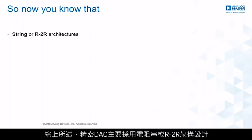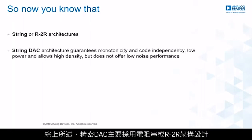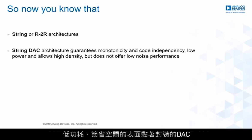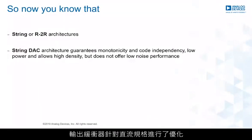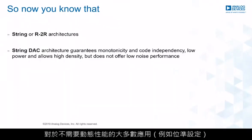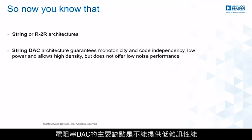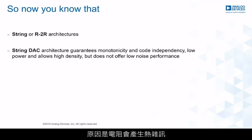In summary, precision DACs are mainly designed with string or R-2R architectures. String DAC architecture allows the manufacture of guaranteed monotonic, high-resolution, low-power DACs in space-saving surface mount packages. String DACs are mainly designed for static applications, and output buffers are optimized for DC specifications. String DACs are the preferred architecture for multi-channel output DACs due to higher channel density. For most applications where dynamic performance is not required — for example, level setting — a string DAC is suitable. The main disadvantage of string DACs is that they do not offer low noise performance due to thermal noise generated by the resistors.